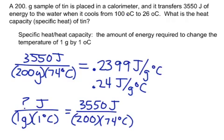So if you solve this for x, it's going to amount to doing the exact same thing, 3,550 divided by 200 divided by 74, and you'd get the exact same answer. Either way of thinking about it is a perfectly fine way of thinking about it.